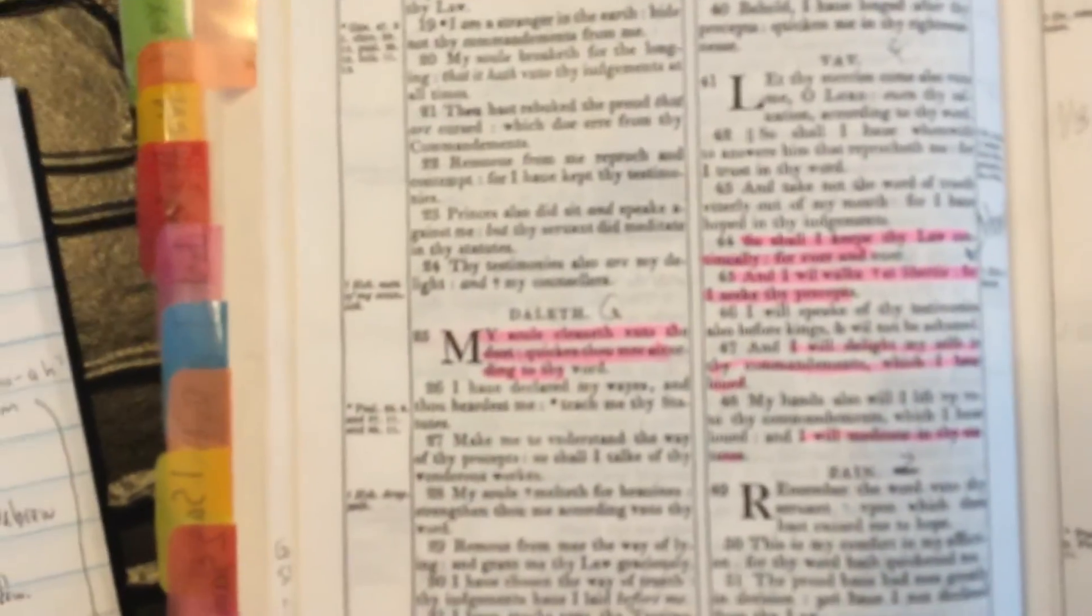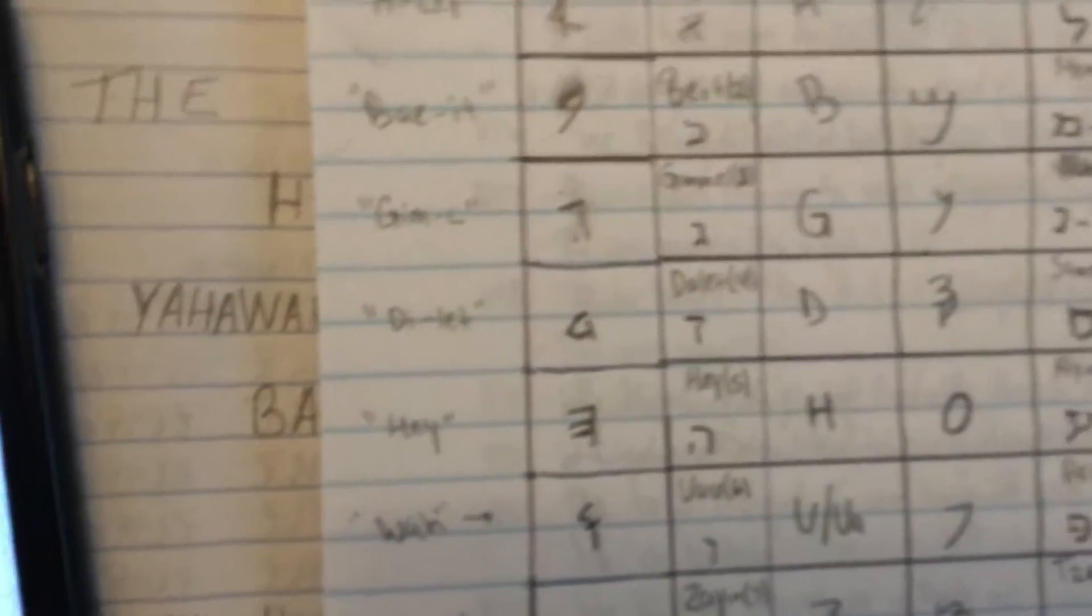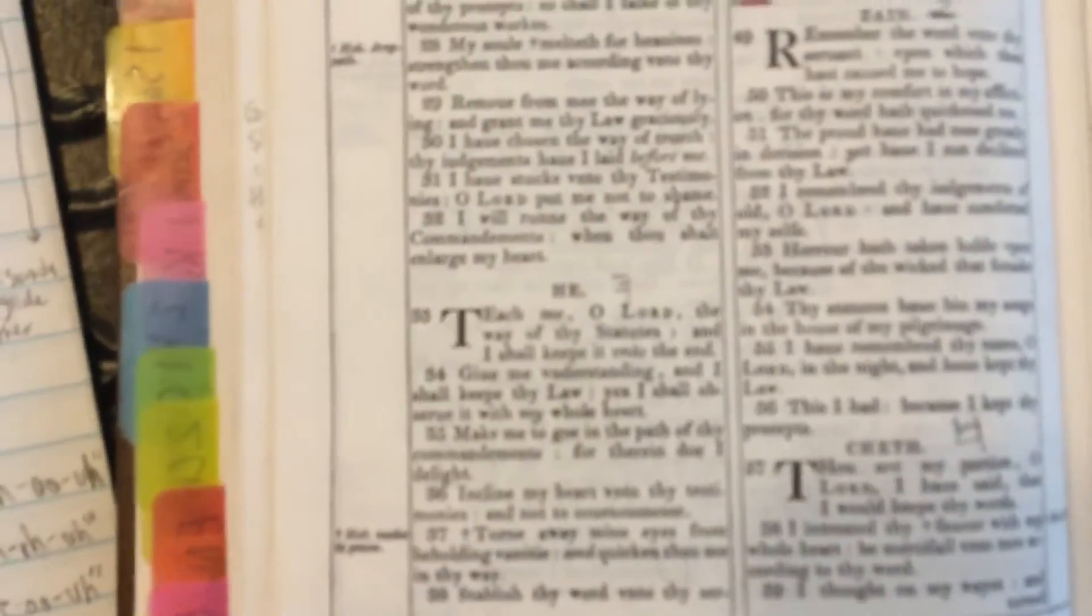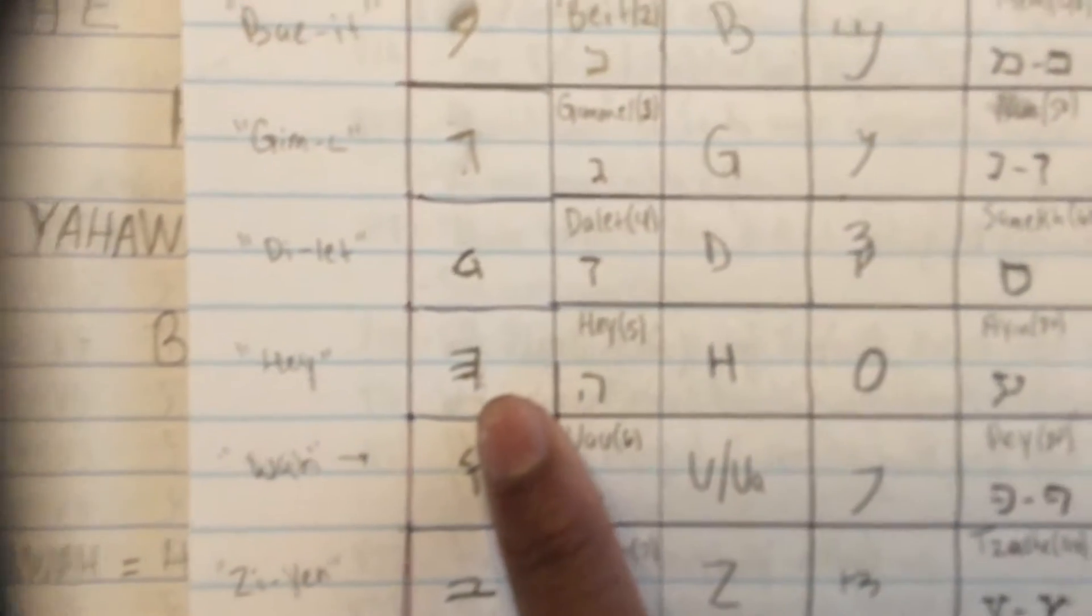Next page, look at that one. Next one: Daleth. It's the same thing. The next one, it looks like it says 'he' but that's Hey. Look how you pronounce that one, pronounce it Hey. It's right here, that's the letter H. That's what you put in your Yahweh: Hey.